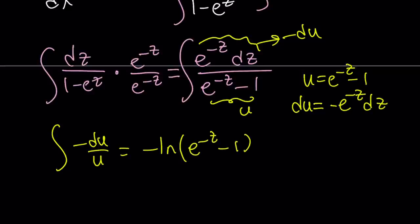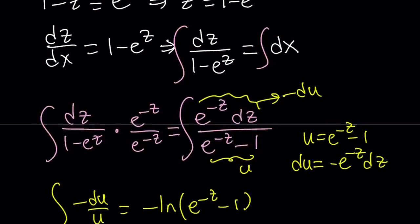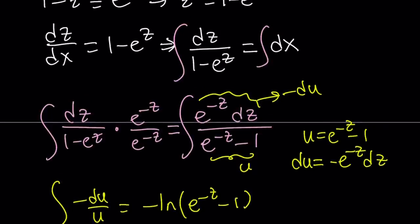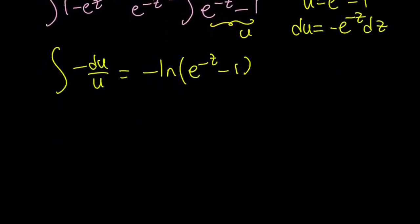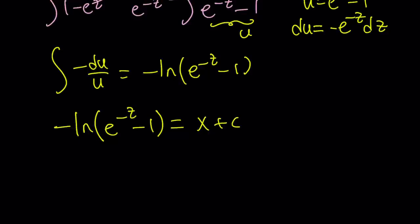I'm going to save the constant for the right hand side. The integral of dx is just x plus c. So we set the left hand side — obtained by u-substitution — equal to x plus c.